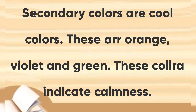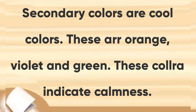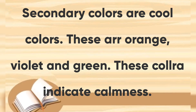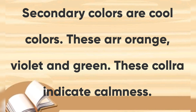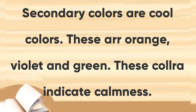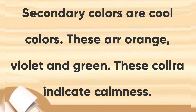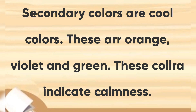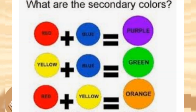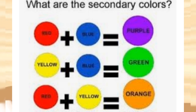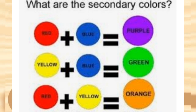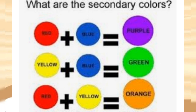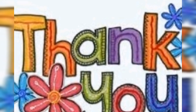Secondary colors are cool colors. These are orange, violet, and green. These colors indicate calmness and peacefulness. This illustration shows you how to make secondary colors: red plus blue equals violet, yellow plus blue equals green, and red plus yellow equals orange. This is how secondary colors form.